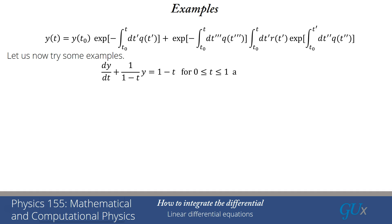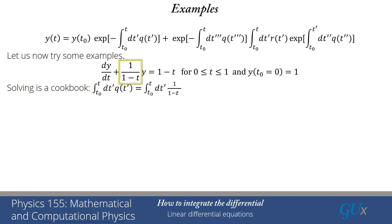Let's try some examples. The first one is dy/dt plus 1/(1−t) times y equals 1−t, with t restricted between 0 and 1, t₀ equals 0, and y(0) equals 1. It's a cookbook, so let's identify q(t) — it's 1/(1−t). The integral of that becomes log(1−t) from 0 to t, which gives log(1/(1−t)), or equivalently minus log(1−t).